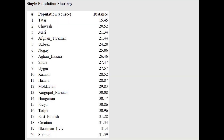In single population sharing, this person is closest to Tatars, Chuvash, and Maris. But you have to keep in mind that in the Eurogenes K13 oracle on GED match, there are no reference samples for Bashkirs. So if they had Bashkirs, he would probably be closer to Bashkirs than to Tatars.